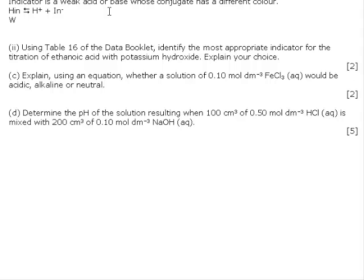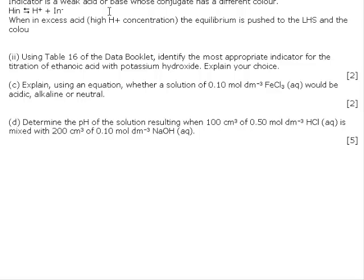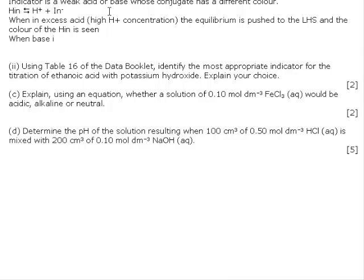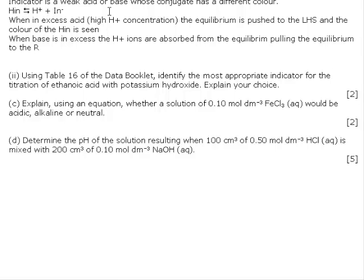Therefore, when in an excess acid, in other words high hydrogen ion concentration, the equilibrium is pushed to the left-hand side and the color of the HIn is seen. When base is in excess, the H+ ions are absorbed from the equilibrium, pulling the equilibrium to the right-hand side and the color of In- is seen.